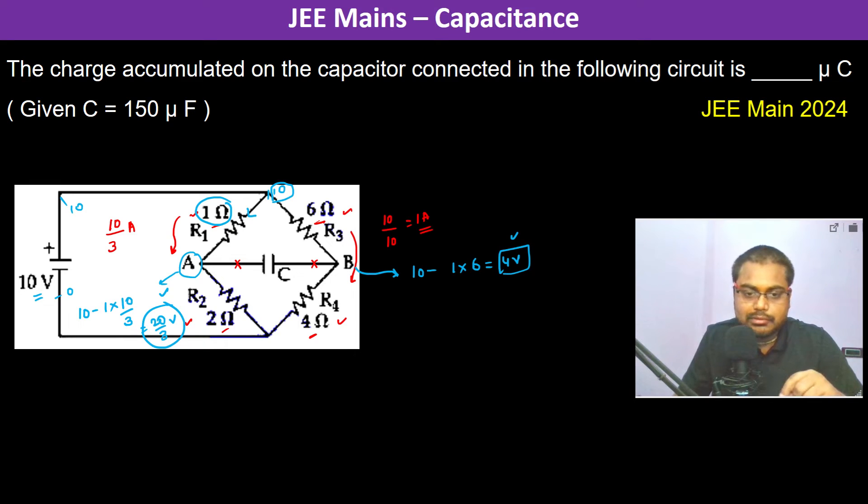The potential difference across the capacitor is 20/3 minus 4, which equals 8/3 volts.